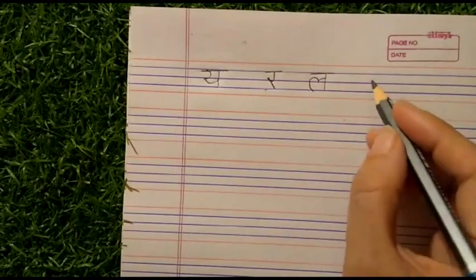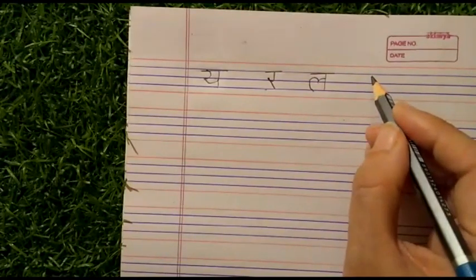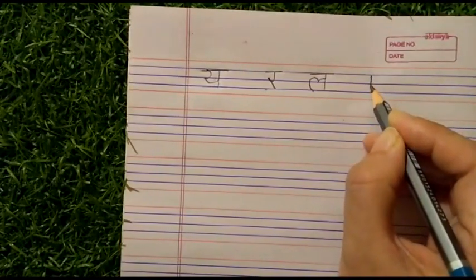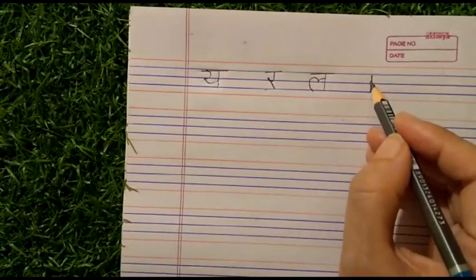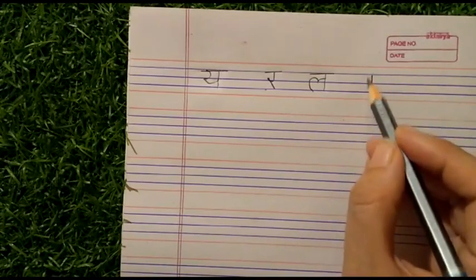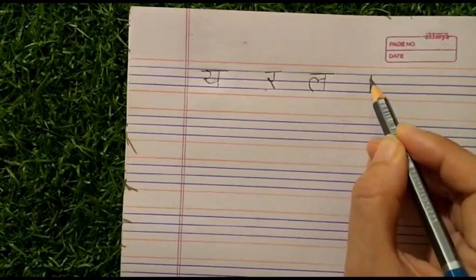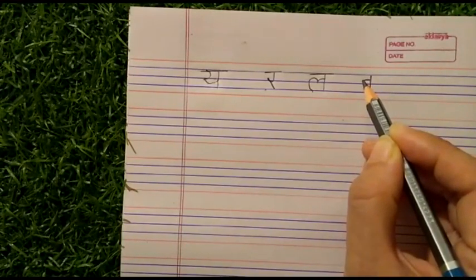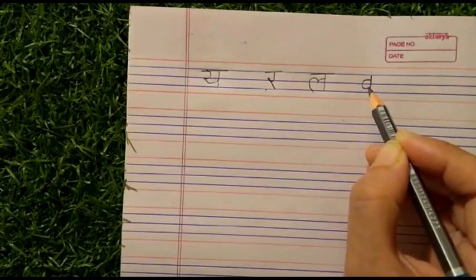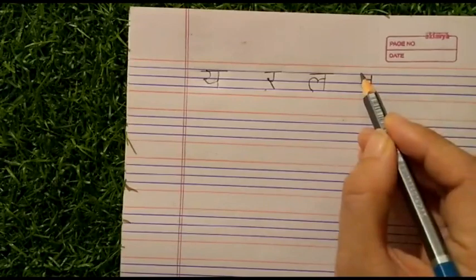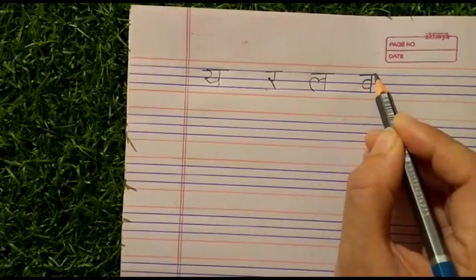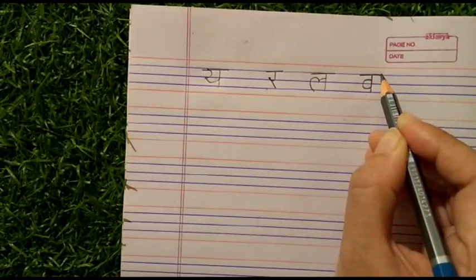Then I will show you how to write Vyanjan V: a standing line. Now from the midpoint of the first and second blue line we will write a C. The C should not touch the third blue line — it will look like this — and then another sleeping line overhead.